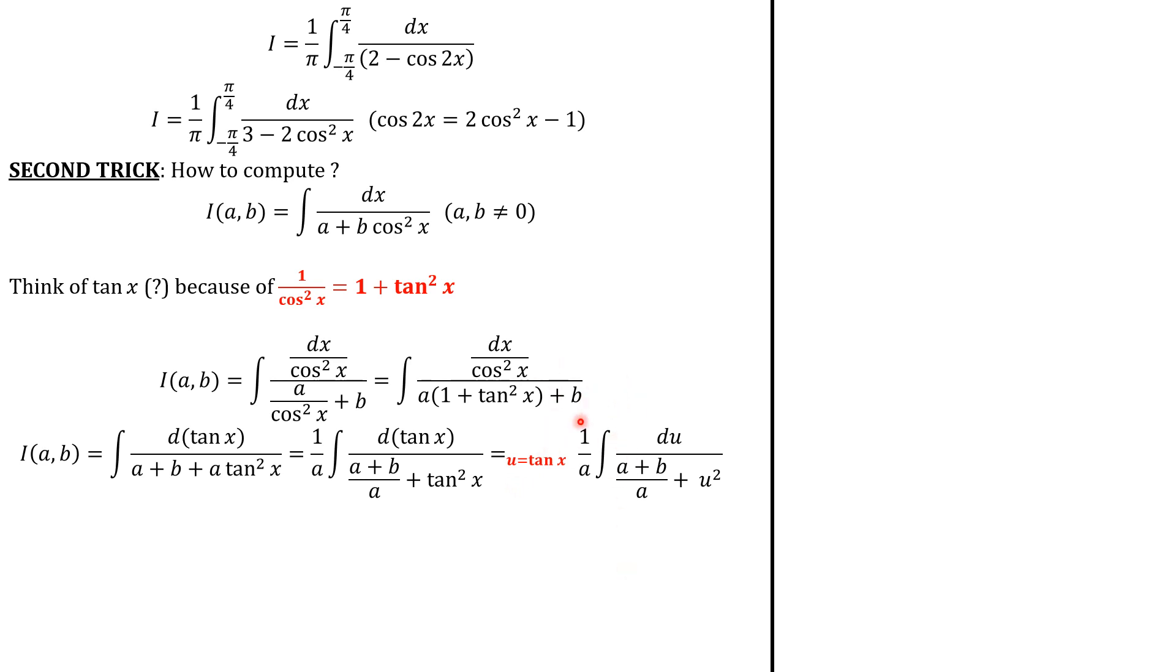Now, to compute this antiderivative, we have two cases. If a plus b over a is positive, we know that this polynomial has no real solution. So, we use arctan function. But, if a plus b over a is negative, we know that a plus b over a we write as negative k square. So, that this polynomial has two real roots, k and negative k. So, we can use the partial fraction technique to compute this integral. Actually, we're going to have the logarithm function in the antiderivative.